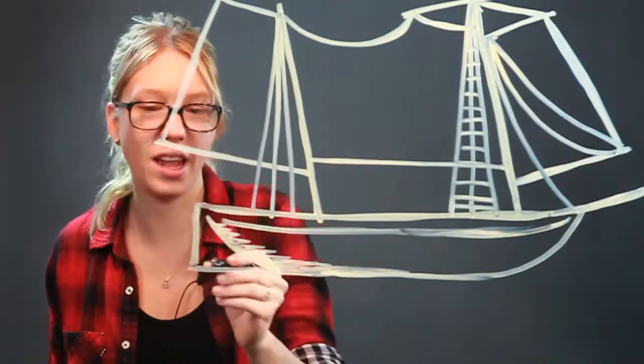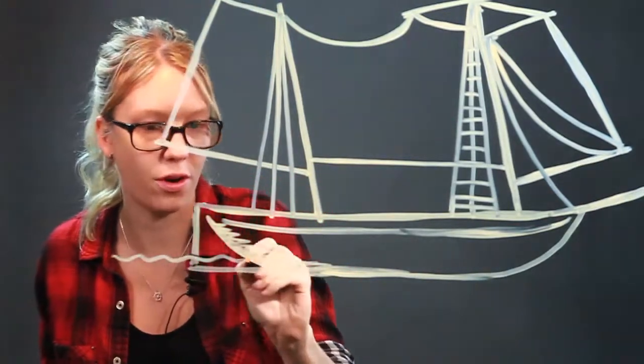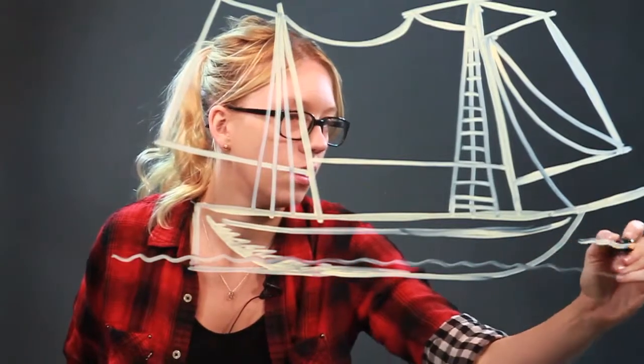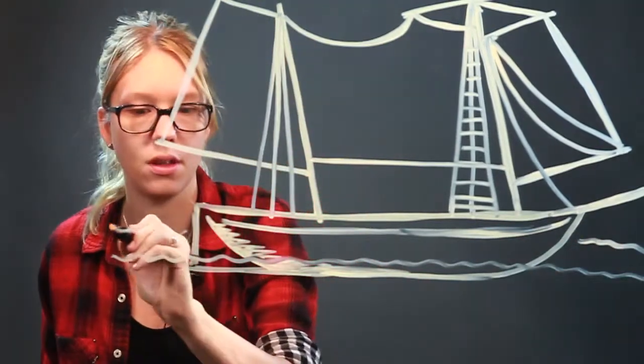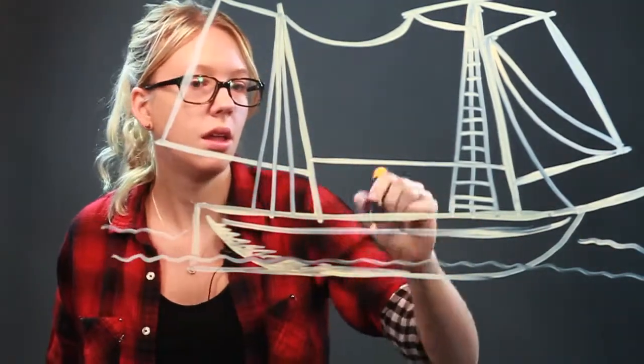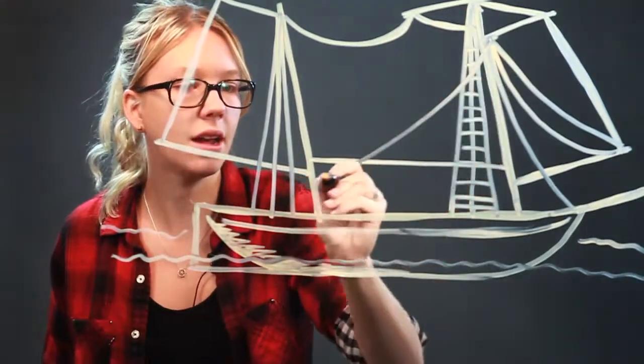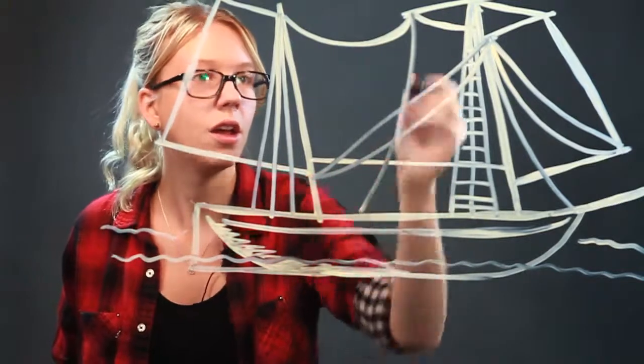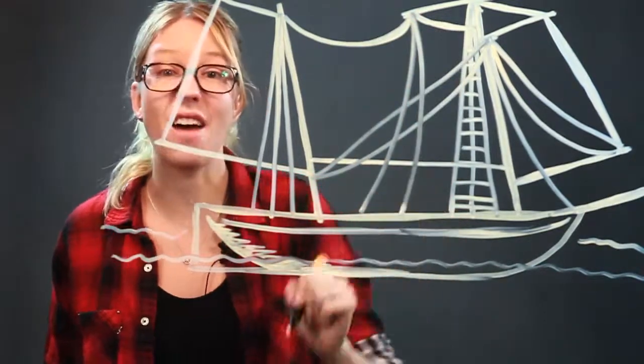To make it really look like a ship, let's put some water across. Some little waves. Waves in the background. And a couple bit more rope. You can get crazy because ships have a lot of rope.